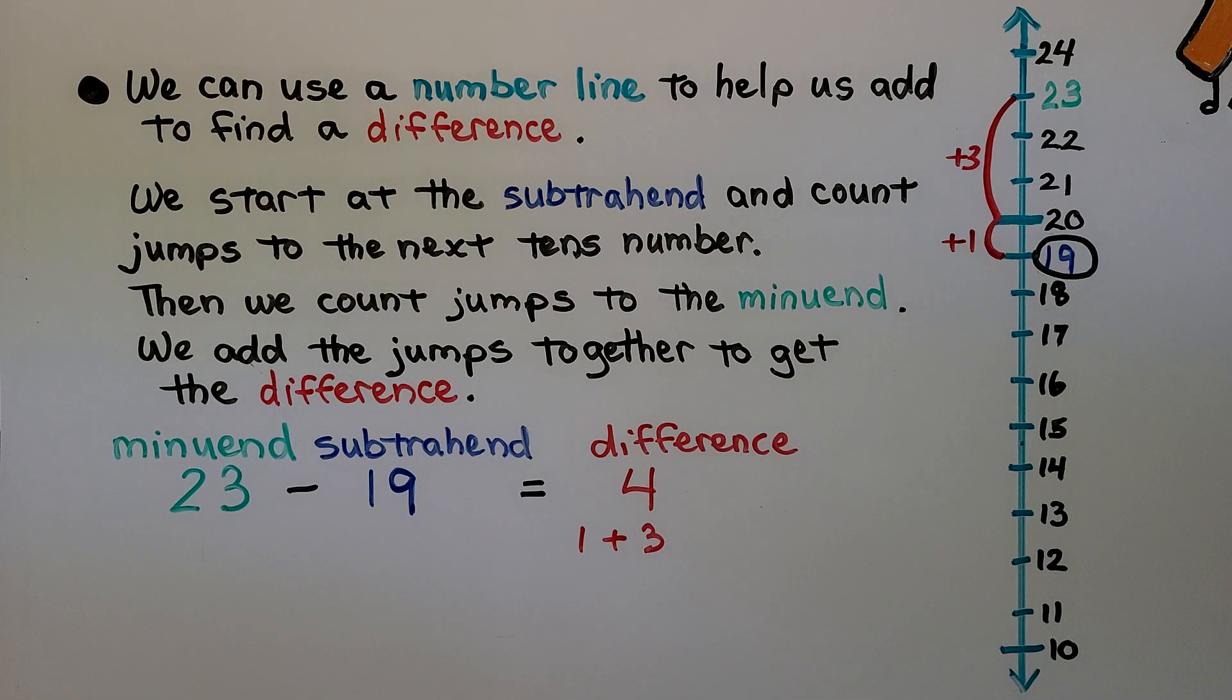So, what we've learned is that we can use a number line to help us add to find a difference. And we can find a difference by counting on with mental math. We start at the subtrahend and count jumps to the next tens number. 23 minus 19.